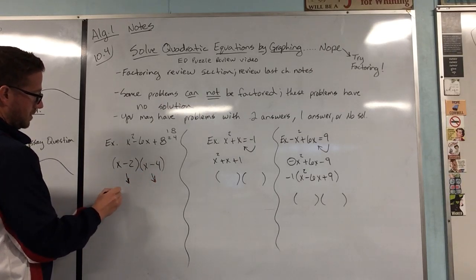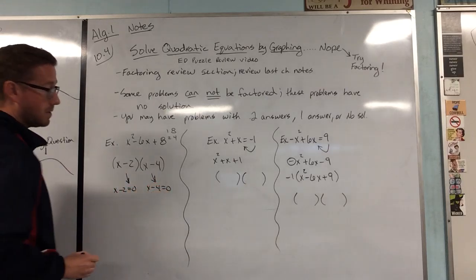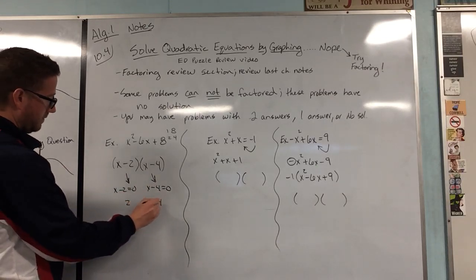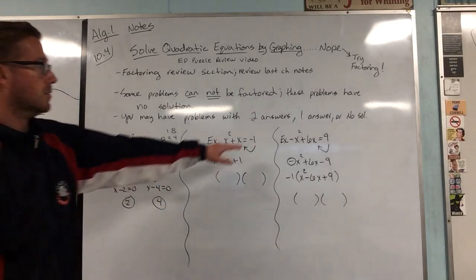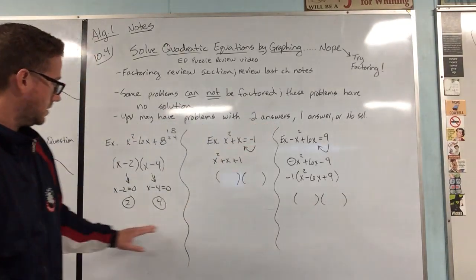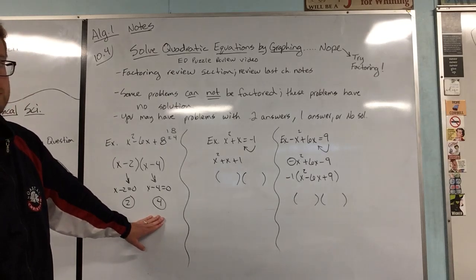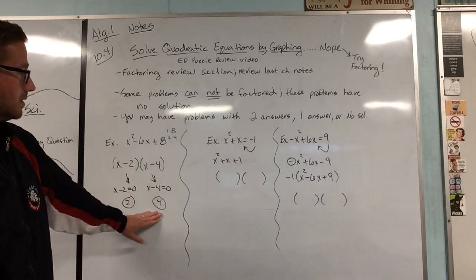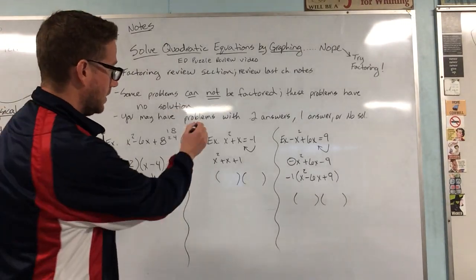And just solve these out. So you're going to get 2 and you're going to get 4. So this one right here would be an example where you have two answers—they are 2 and they are 4. Another way of saying that is that the roots of this problem are 2 and 4. That's where they would cross the x-axis.